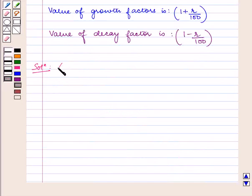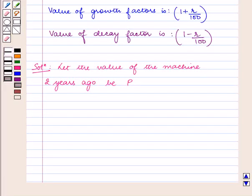Let the value of the machine 2 years ago be P. As the value of the machine has decreased every year in 2 years, so the time n is equal to 2 years.